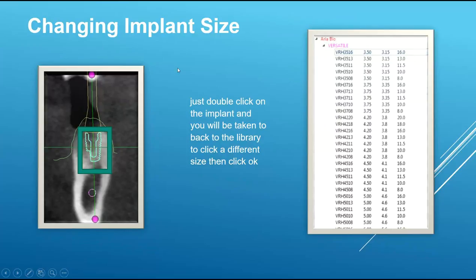Changing implant size is very simple — there are two steps. You can either double-click on the implant and it will automatically take you back to the library system to change the size, or you can click on 'Library' and it will take you back to change the size of the implant.